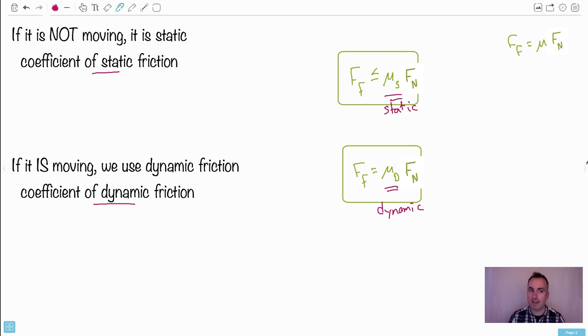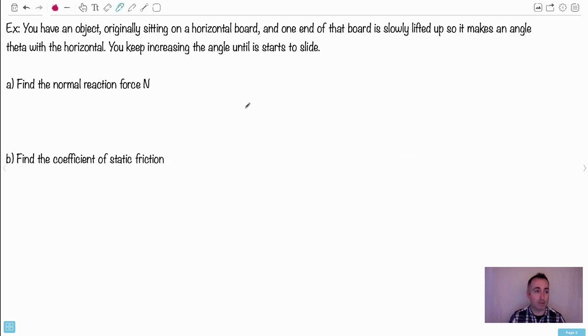So let's take a look then if we can do a real example. You have an object originally sitting on a horizontal board, and one end of that board is slowly lifted up so it makes an angle theta with the horizontal. You keep raising it until this object starts to slide. This could be like me just sitting there and all of a sudden you just raise it. Do I fall down? You're seeing the old movie Titanic, for example, that happened to the people on it, sadly. This happens with anything as it raises up and eventually it's going to start sliding. Same thing with snow and avalanches, actually.